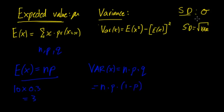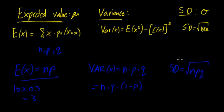Therefore, as we know, the standard deviation is the square root of the variance. So the standard deviation is equal to the square root of n times p times q. You have to be really careful because standard deviation is used a lot more than variance, but to calculate standard deviation you often have to calculate variance first. So make sure you remember it's the square root of npq.